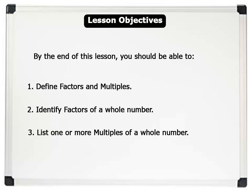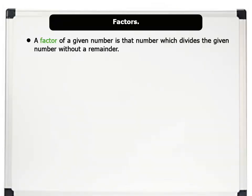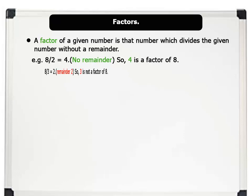Now, let us begin. A factor of a given number is that number which divides the given number without a remainder. For example, 8 divided by 2 equals 4 with no remainder. So, 4 is a factor of 8. But 8 divided by 3 equals 2 remainder 2. Therefore, 3 is not a factor of 8.